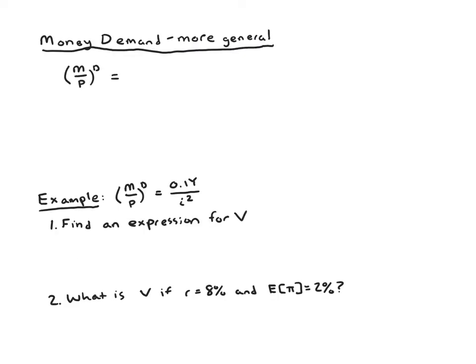Probably the most important factor we've left out is what we could think of as the opportunity cost of holding money. If you hold money, as opposed to those other assets we talked about earlier, like bonds or stocks, what you miss out on is interest.